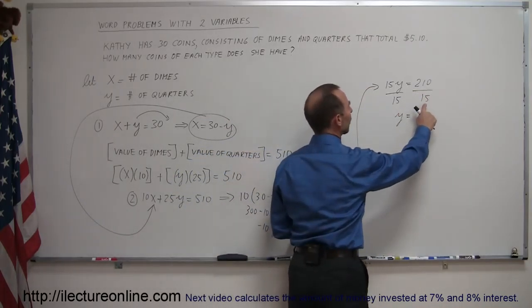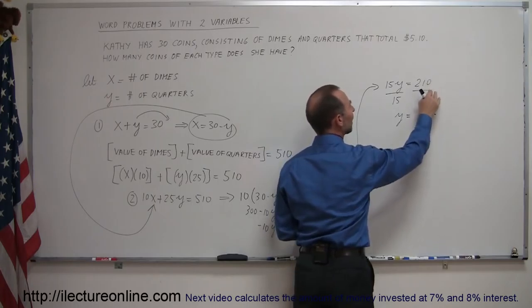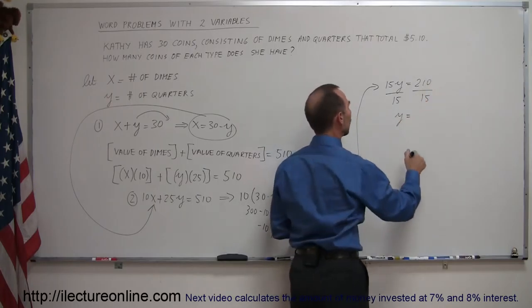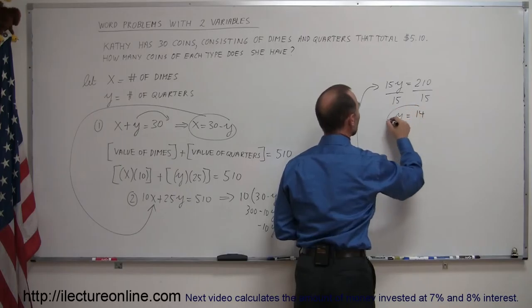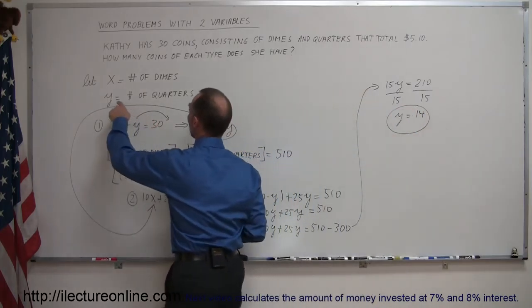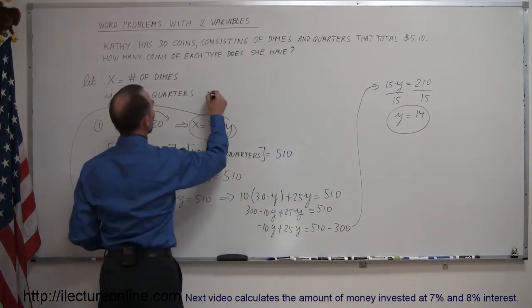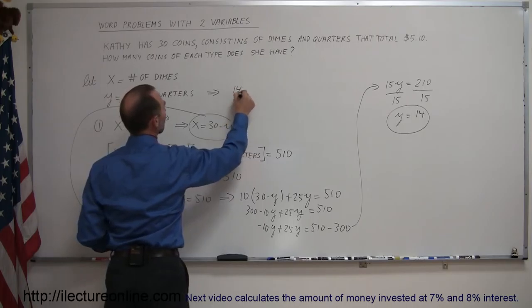So y is equal to, how many times does 15 go into 210? Well, 10 times 15 is 150, that leaves us with 60, and 15 goes into 60 four times, so y equals 14. And since y represents the number of quarters, that means we have 14 quarters.